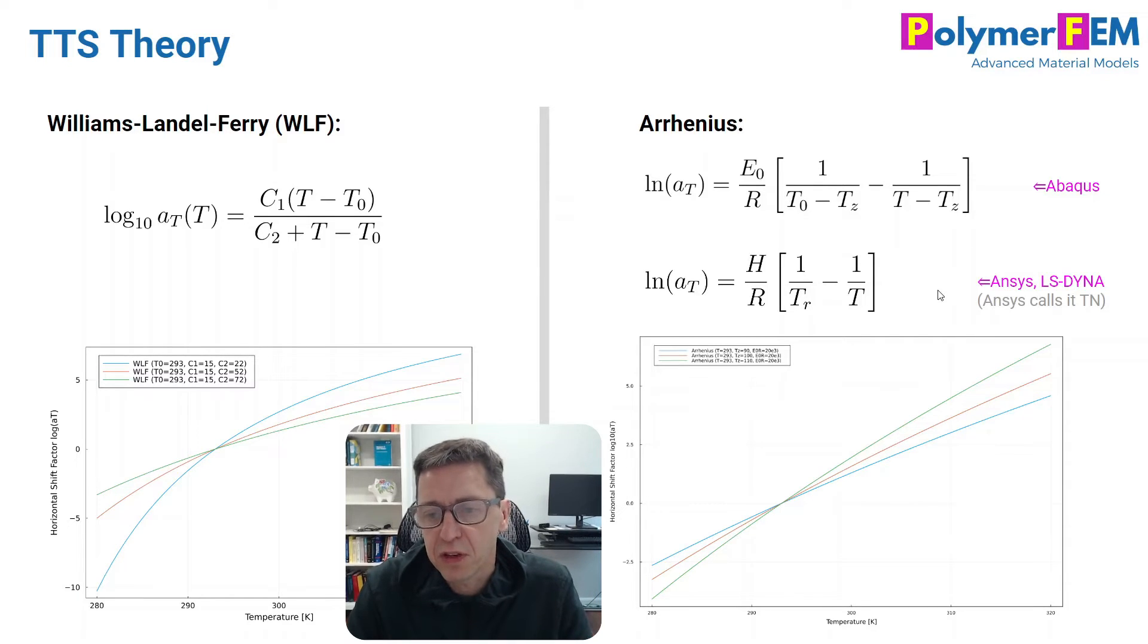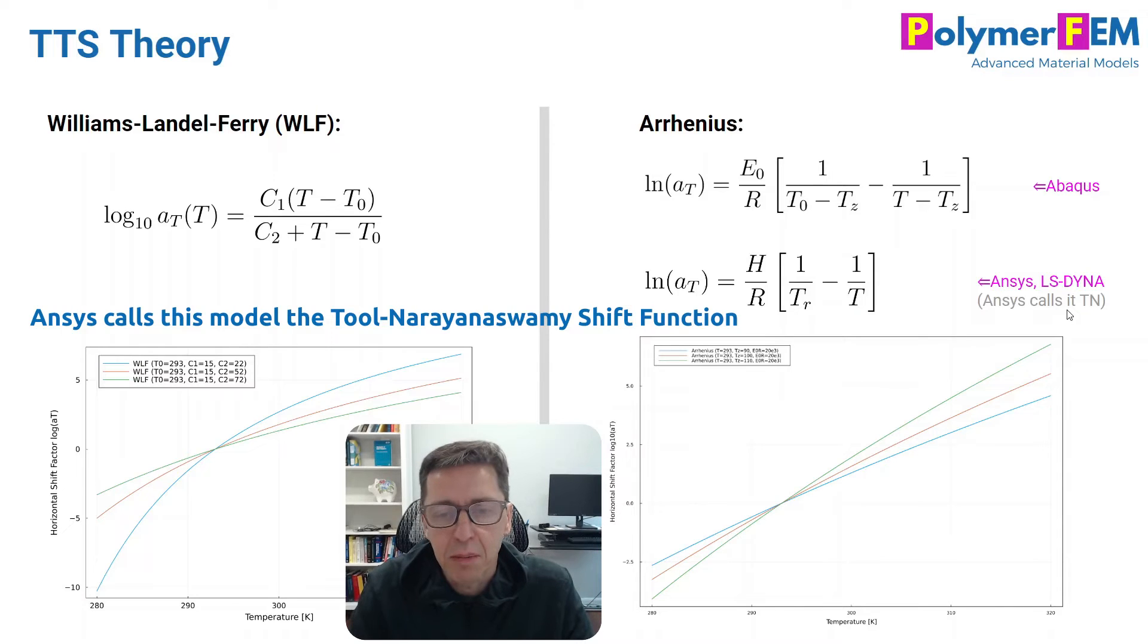So it's kind of interesting. It's a different equation used by the two. And if you plot the horizontal shift factor versus temperature, you'll get this kind of response. Of course, the shape of these curves will depend on the parameters. So in short, Abaqus has three parameters, and Ansys and LS-Dyna has two parameters. Another thing to point out is Ansys calls this something else than Arrhenius. They call it the TN model in their documentation.